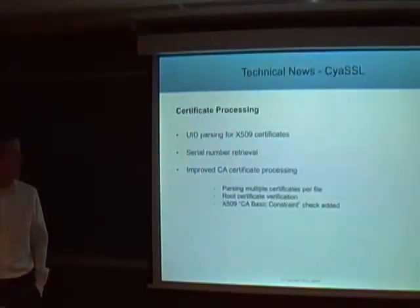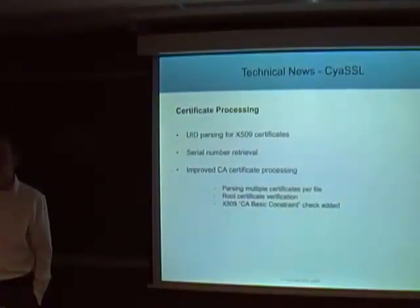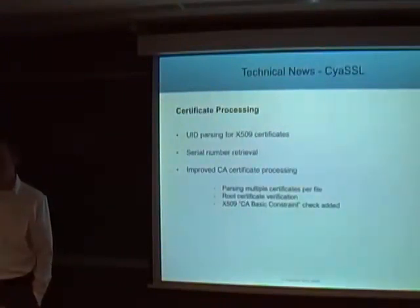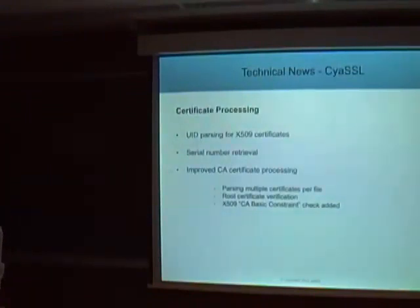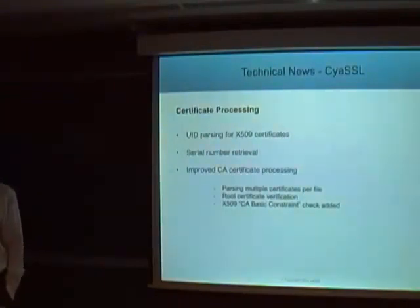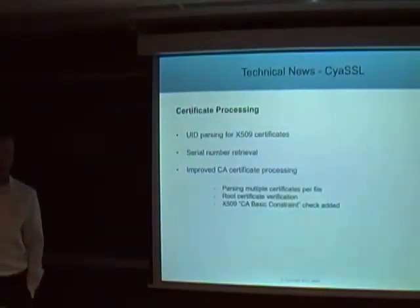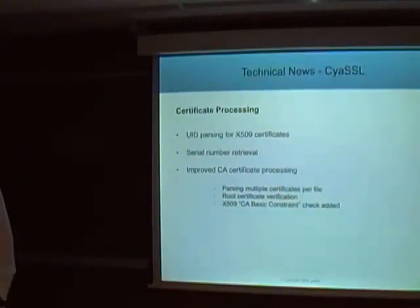We've changed a few things regarding certificate processing. We added UID parsing for X.509 certificates, where the UID will be contained in the subject field and you can access it through the CYASL API. We added serial number retrieval, and we improved our CA certificate processing in several ways — you can now load multiple CA certificates per file, which can simplify initialization of clients and servers, especially useful when you need to load multiple CA certificates.